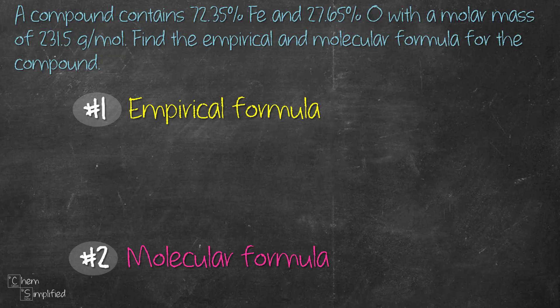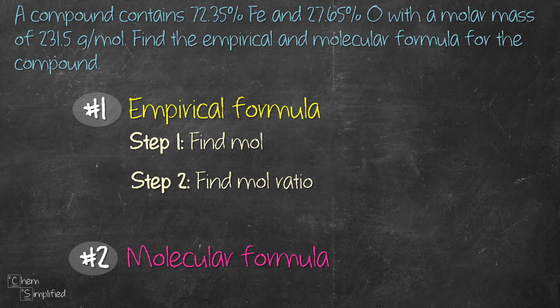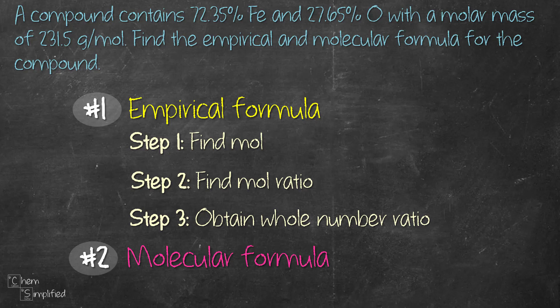There are three steps to find the empirical formula. We need to first find the mole for each atom and then using the moles for each atom, we're going to find the mole ratio. Using the mole ratio, we're then going to find the whole number ratio that will give us the empirical formula. From the empirical formula, we'll figure out the factor, multiply it in and then that will give us the molecular formula.